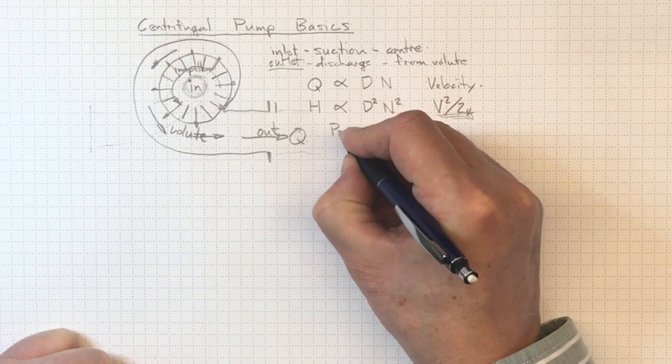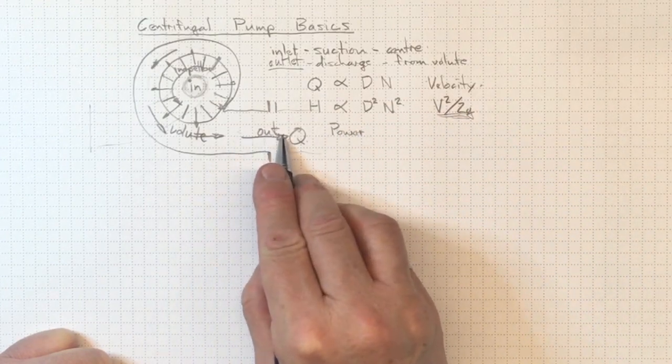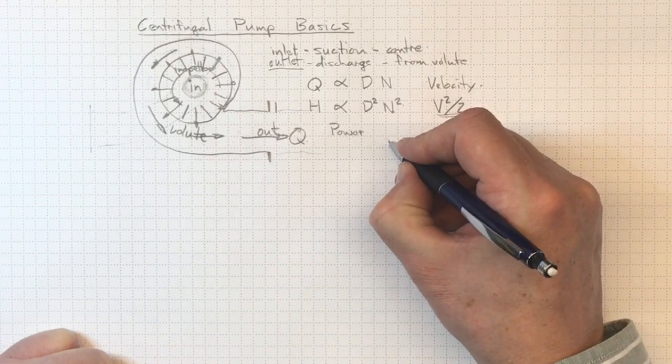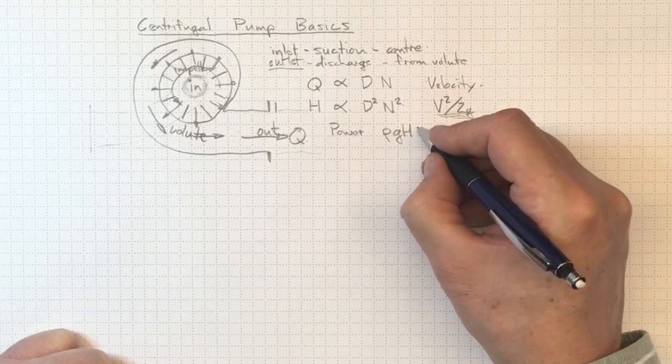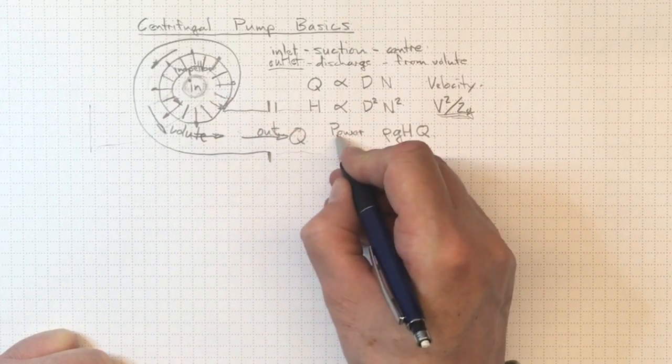And of course, the power that it takes to drive the pump will depend on the amount of useful work that we're doing with the fluid. And when we do work on a fluid, we see a pressure rise, a rho GH type pressure rise, and the flow, the rate at which we're pushing volume out the end.